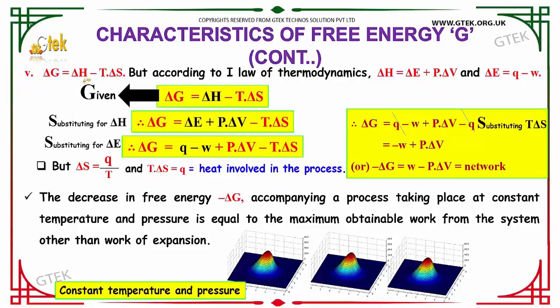Delta G is equal to delta H minus T into delta S. According to the first law of thermodynamics, delta H is equal to delta E plus P into delta V, and delta E is equal to Q minus W.